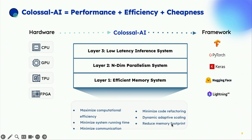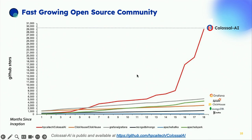Colossal AI provides a three-layered system. The first layer is an efficient memory system to best utilize available memory. The second layer figures out best parallelization — called N-dimensional parallelism. The third is low latency inference to reduce cost and latency of large model inference. The goal is to hide the many complicated and interacting decisions from users. We now have well over 30,000 GitHub stars, and stargazers come from about 140 different countries and regions.